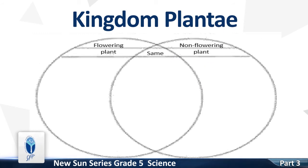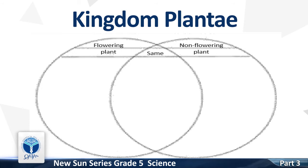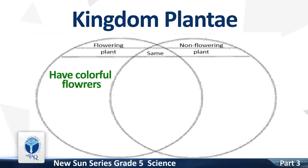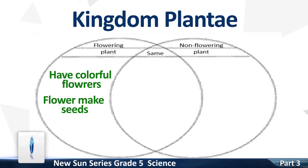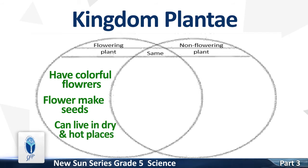Flowering plants. Flowering plants have colorful flowers that attract insects. Flowers make seeds after fertilization. Flowering plants can live in dry and hot places.